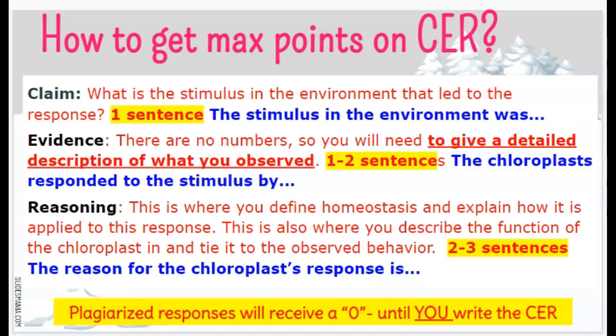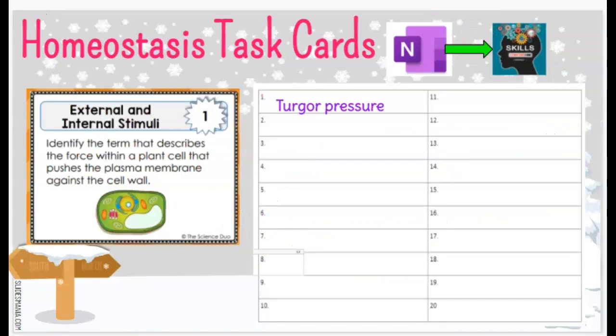It is a major grade, so let's use the tools you're given to get the maximum points you can. The task today continues on with homeostasis. You'll find it in OneNote, in your skills building section. You have a link to the cards, and the task cards look like this — they have a question or something to do, and then some kind of graphic. You also have your recording table.